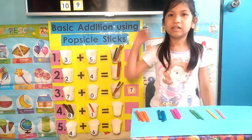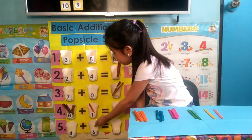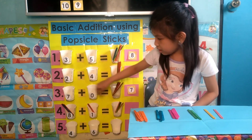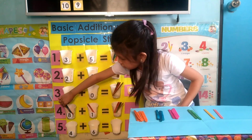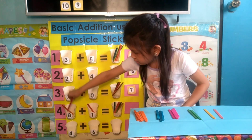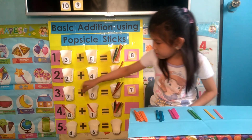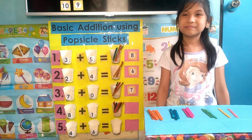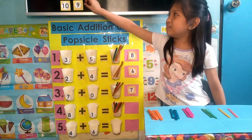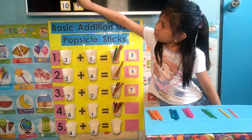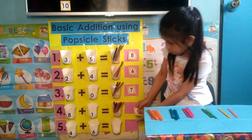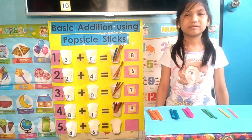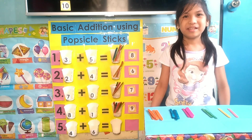Now, Leia, what is our number sentence? Eight plus one equals one, two, three, four, five, six, seven, eight, nine! Okay, Leia, what is the number nine up there? Here! Okay, paste it beside the popsicles. So again, our number sentence is eight plus one equals nine! Very good, Leia! Good job! Yay!